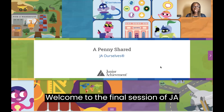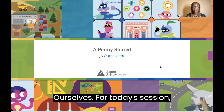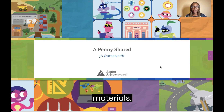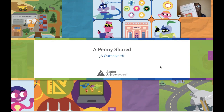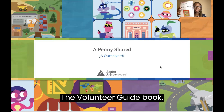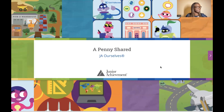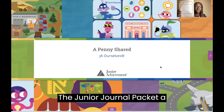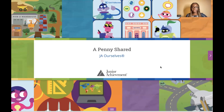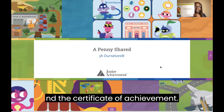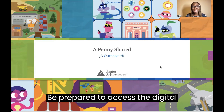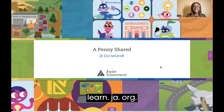Welcome to the final session of JA RSLs. For today's session, you're going to need the following materials: the Volunteer Guidebook, the Junior Journal Packet, and the Certificate of Achievement. Be prepared to access the digital presentation for this session at learn.ja.org.